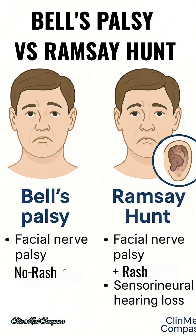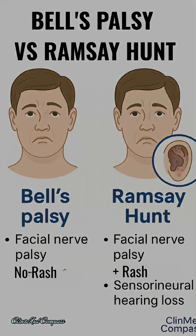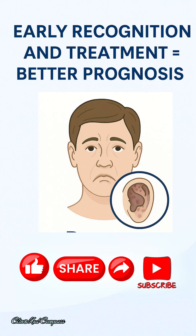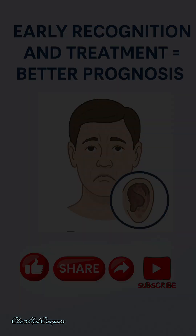Always examine the ear in cases of facial nerve palsy. Distinguish Ramsay Hunt syndrome from Bell's palsy by the presence of a rash and ear pain. Early recognition and treatment lead to better outcomes.